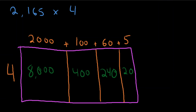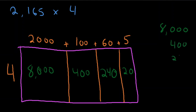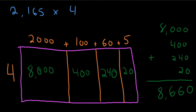Now let's slow down and write these down correctly from greatest to least: 8,000, then 400, then 240, then 20. Let's add them up: ones column gives 0, tens column gives 6, hundreds column gives 6, thousands column gives 8. Our final answer is 8,660.